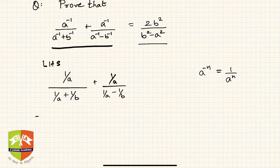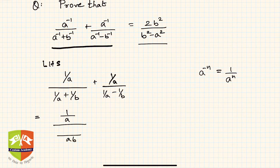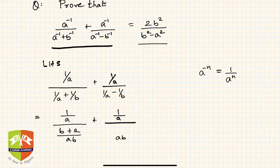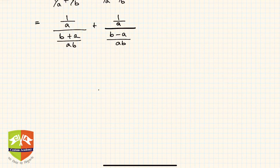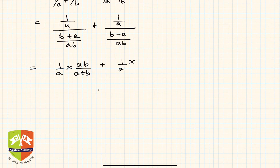It is just a matter of taking the LCM and simplifying. In the denominator, the LCM will be ab, so the terms become b and a. Thus the first term becomes (1/a) divided by (a+b)/ab, and the second term becomes (1/a) divided by (b−a)/ab. Multiplying by the reciprocal, a cancels, reducing to b/(a+b) plus b/(b−a).